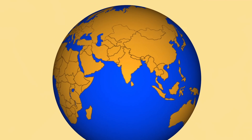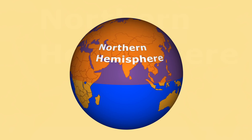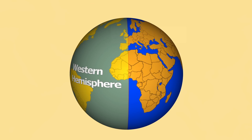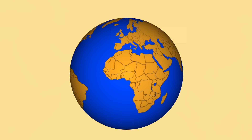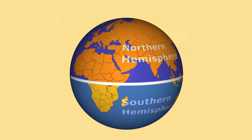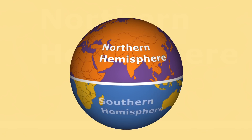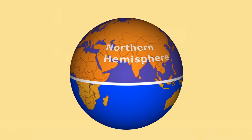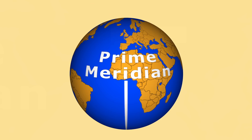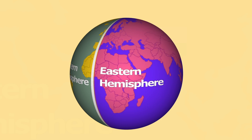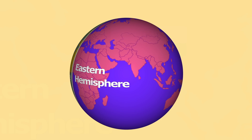A globe can be divided into the northern and southern hemisphere, and the western and eastern hemisphere. The equator divides the globe into the northern and southern hemisphere, and India lies in the northern hemisphere. The prime meridian divides the globe into the western and eastern hemisphere, and India lies in the eastern hemisphere.